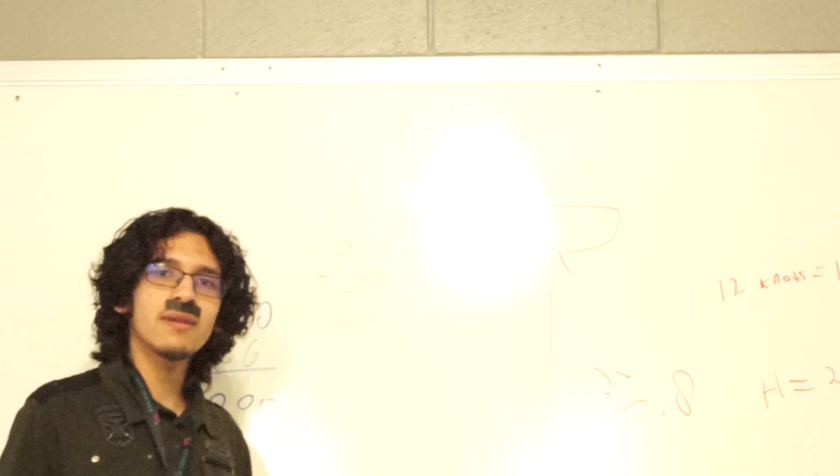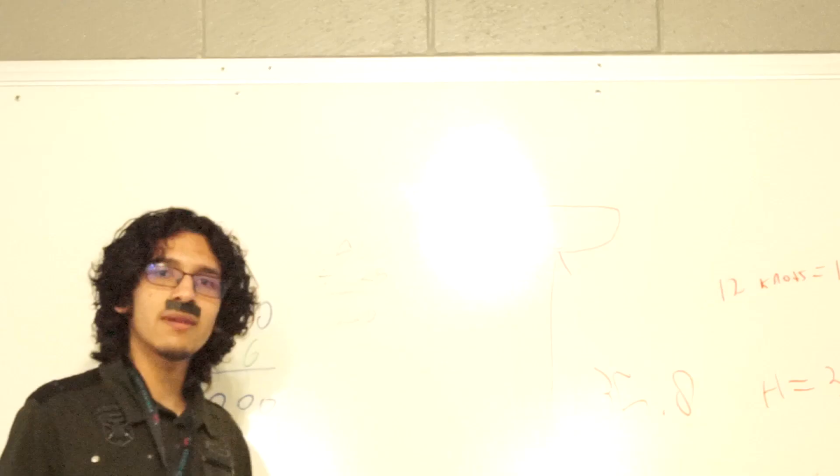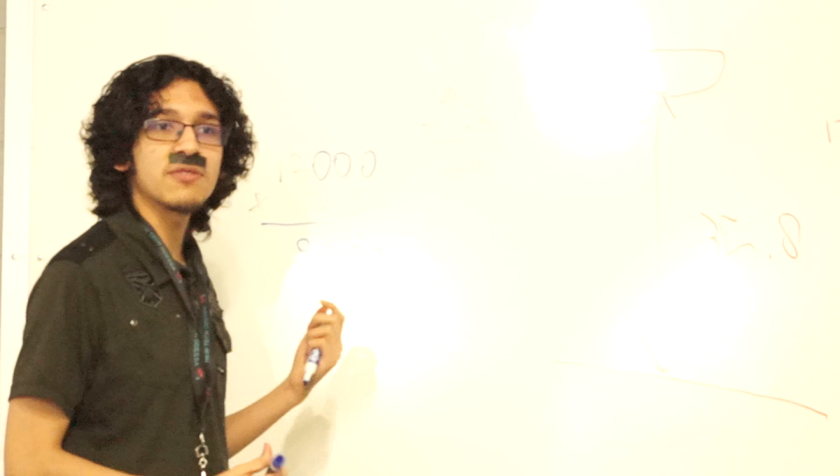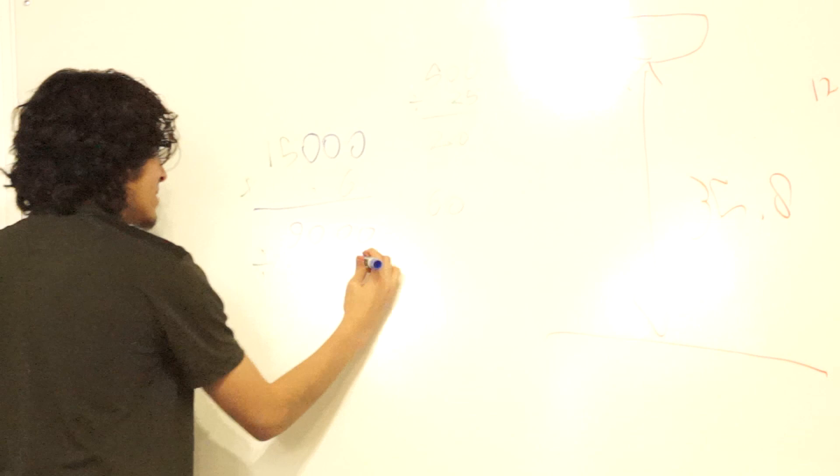And since we know that each minute we're pumping out 20, and each minute we're taking in 80, we can subtract 80 by 20 to get 60 in total. And so, we can divide 9,000 by this 60 to get 150, which calculates to 2.5 hours. So, we know that it'll take 2.5 hours for our ship to completely sink.